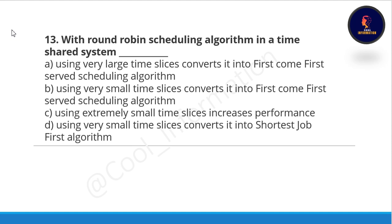The correct option for response time is option B: the total time taken from the submission time till the first response is produced. Question thirteen: with round robin scheduling algorithm in a time shared system, using a very large time slice converts it into first-come-first-serve scheduling algorithm. The correct option is option A: using a very large time slice converts it into first-come-first-serve scheduling algorithm.